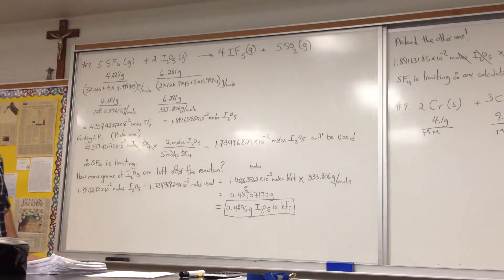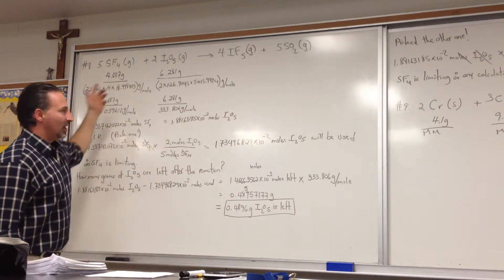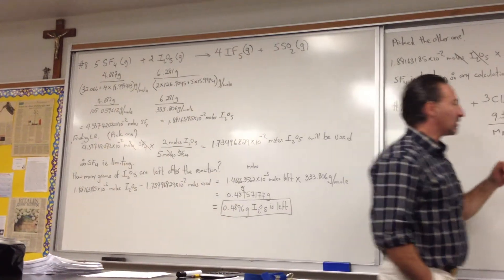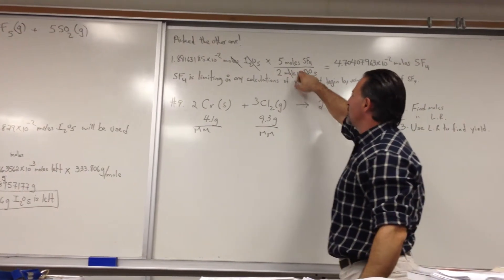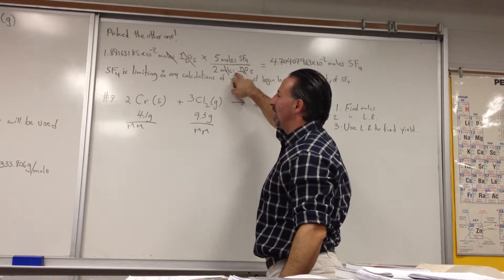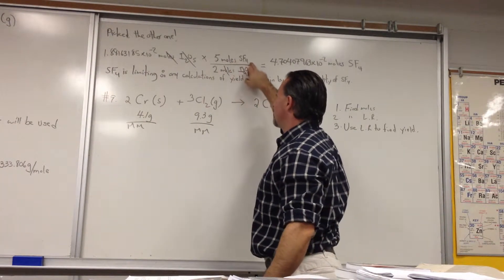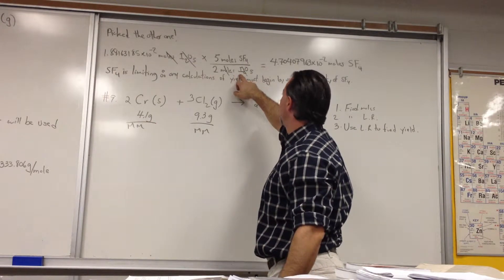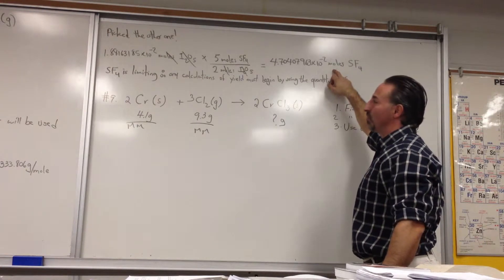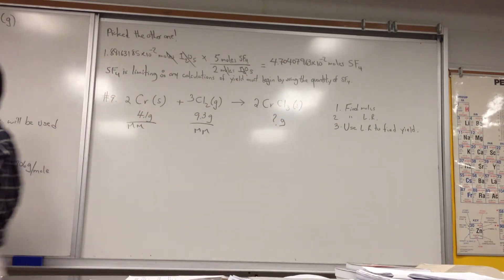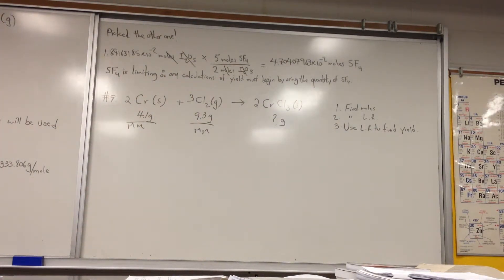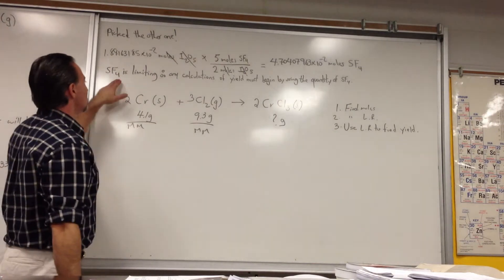Somebody asked: what if you had picked I2O5 first instead? So I started with the number of moles of I2O5 and entered the stoichiometry — five moles of SF4 disappearing for every two moles of I2O5 disappearing. The result is that you'd need 4.7 × 10⁻² moles of SF4. But from our earlier calculation, you only have 4.33 moles of SF4, which means you don't have enough SF4 to react with all the I2O5 present. So we come to the same conclusion: SF4 is the limiting reagent.